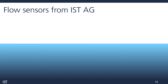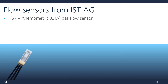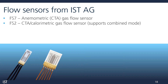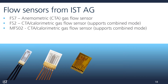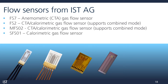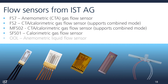Now let's take a look at the standard thermal mass flow sensors from IST. From left to right: the FS7, a gas flow sensor that works in CTA mode; the FS2, a gas flow sensor which can operate in either or both CTA or calorimetric modes; the MFSO2, a gas sensor which can also operate in either or both modes; the SFS01, a gas sensor for calorimetric mode measurement; and the OOL (out-of-liquid), a liquid flow sensor which uses CTA mode. While we don't recommend using gas flow sensors in liquid, some can work in certain oil flows — get in touch to discuss your application.